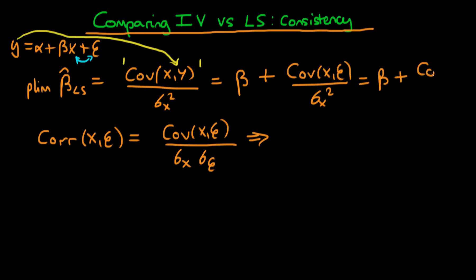When we do that it becomes beta plus the correlation between x and epsilon, and then we sort of have to pre-multiply it by sigma epsilon divided by sigma x. Okay so that's the probability limit of beta hat least squares.